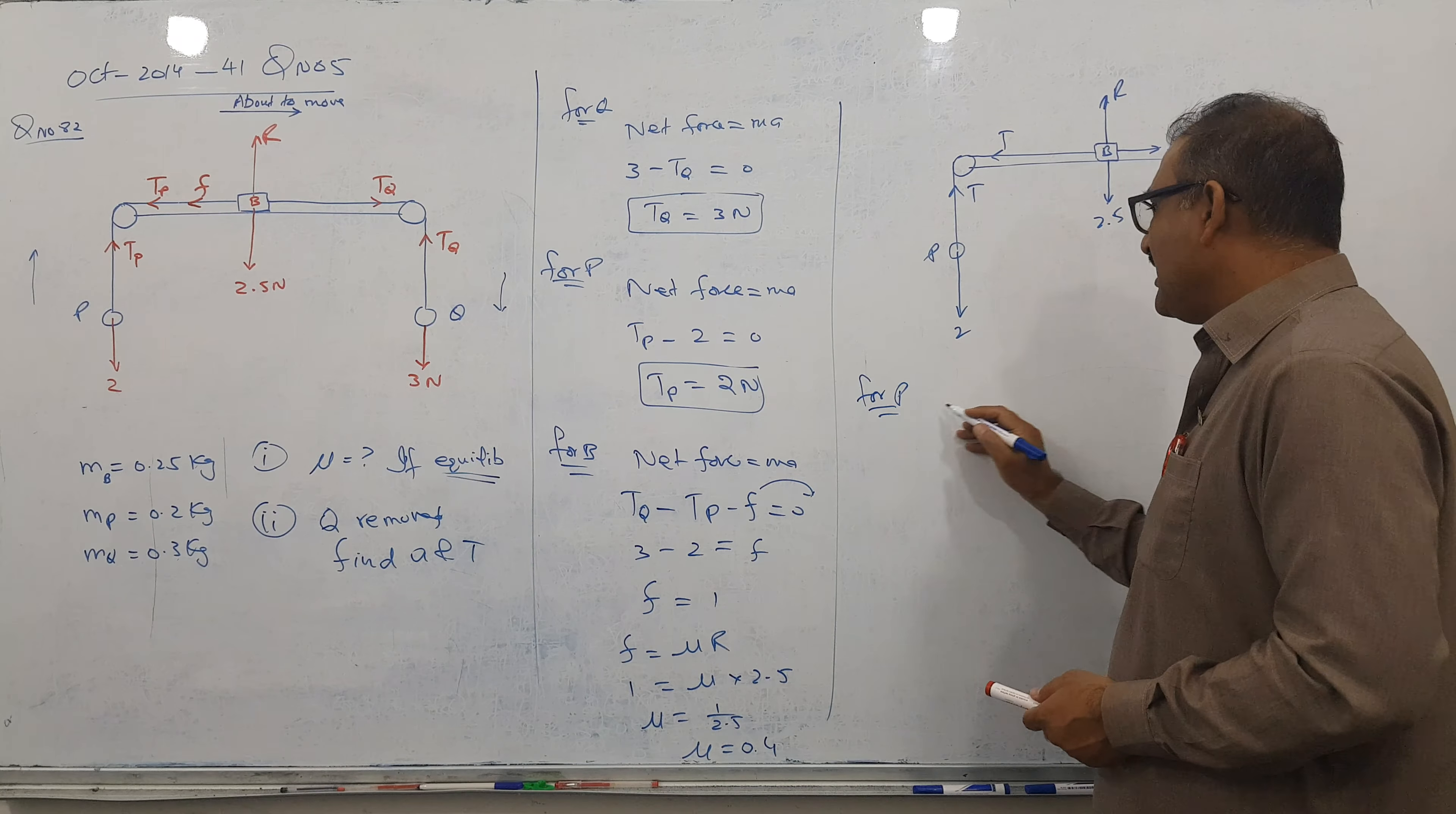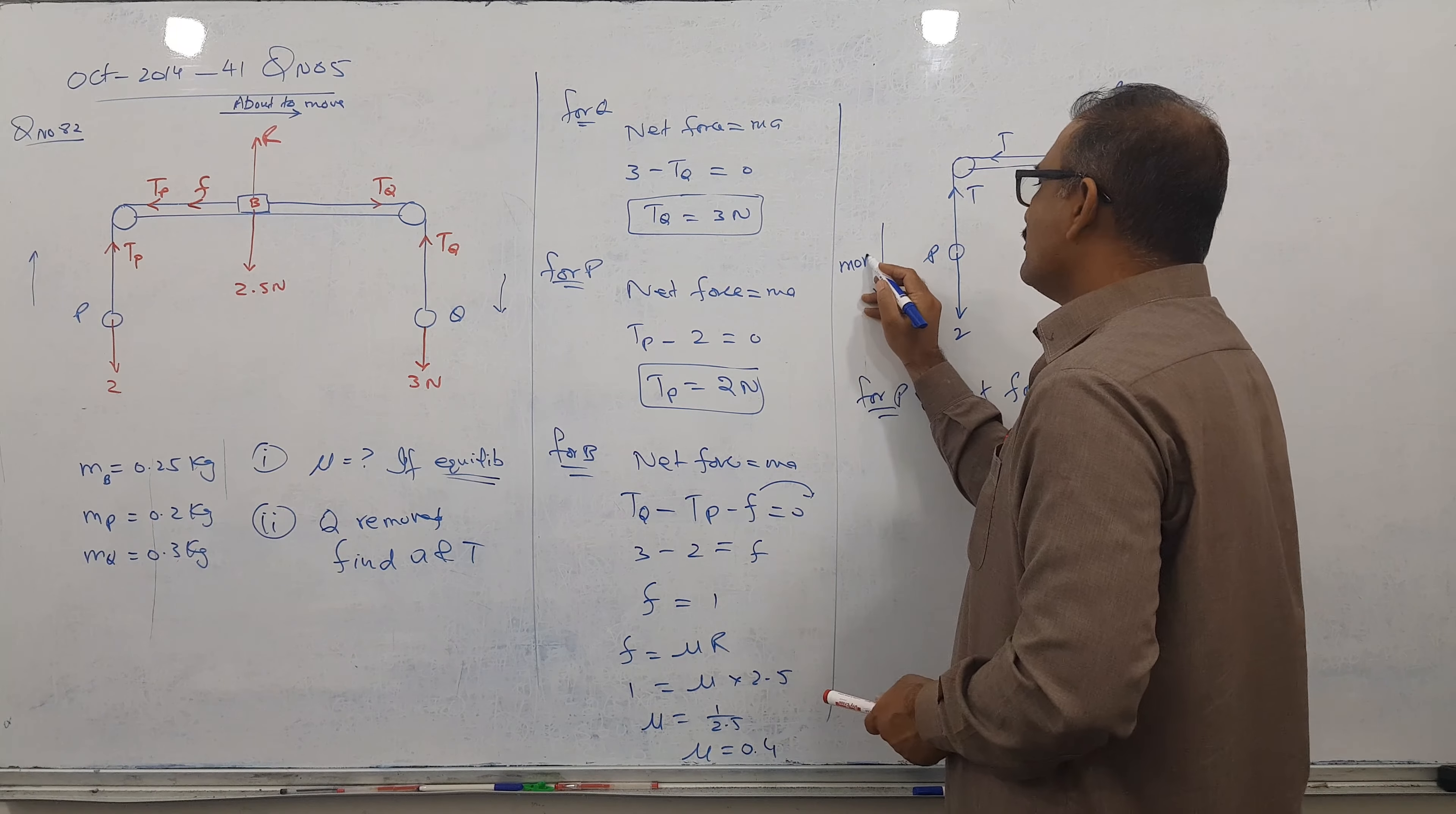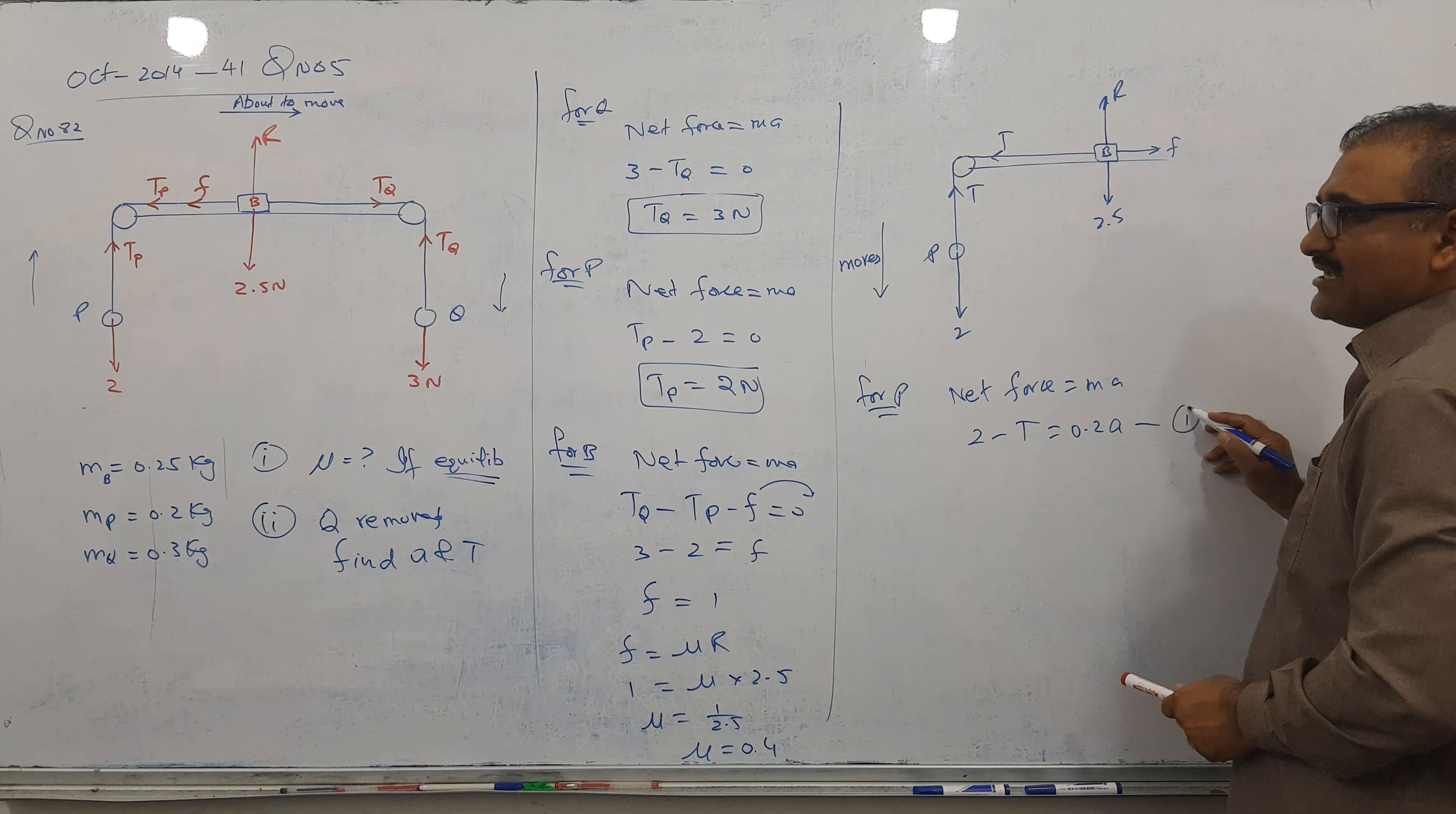So for P, net force equal to MA as usual. Moving, not about to move, this is moving. So moves here. So I can say 2 minus tension equal to MA. Equation 1 done.